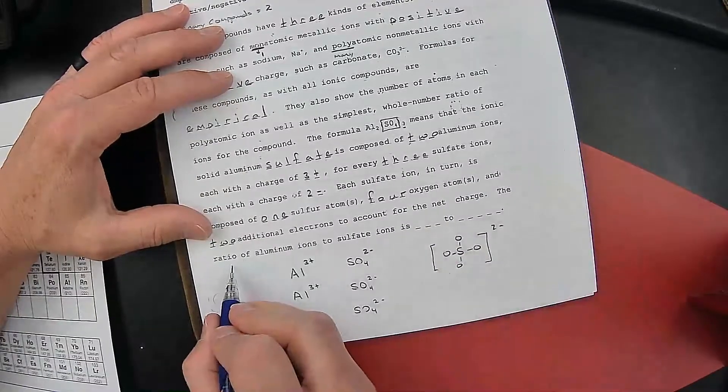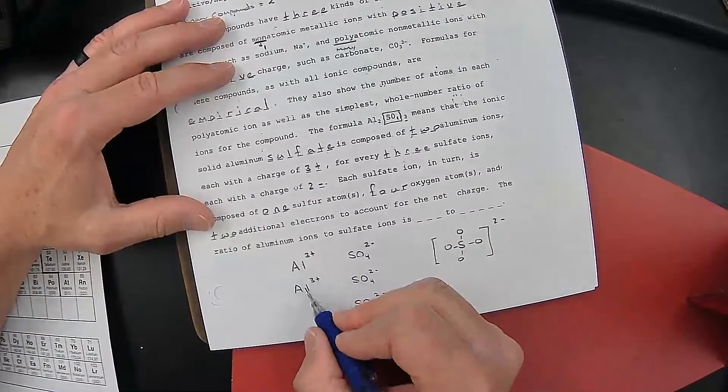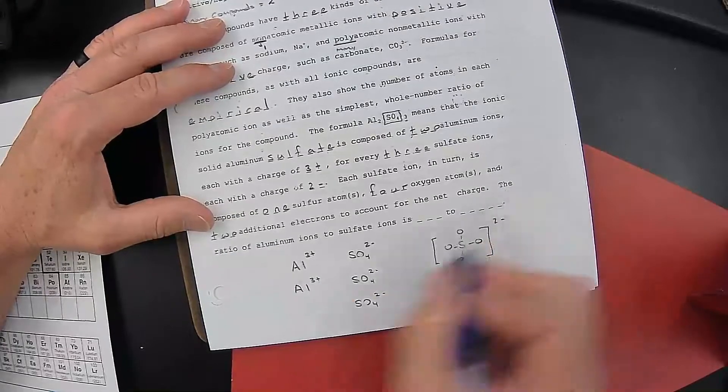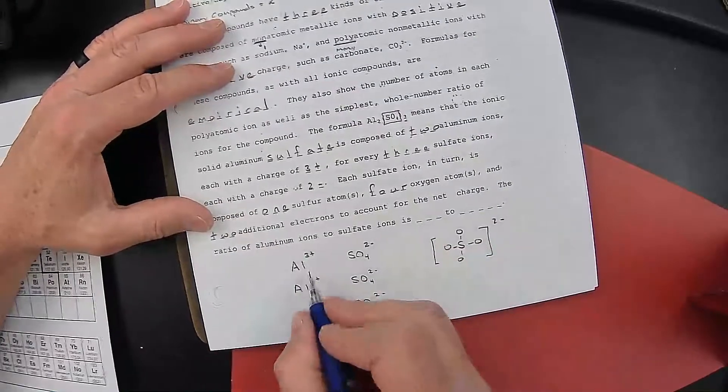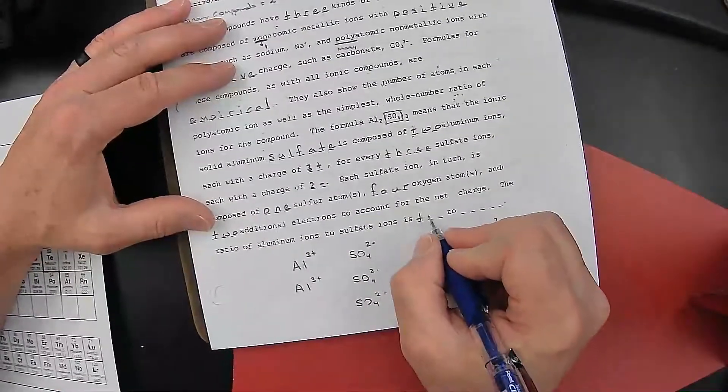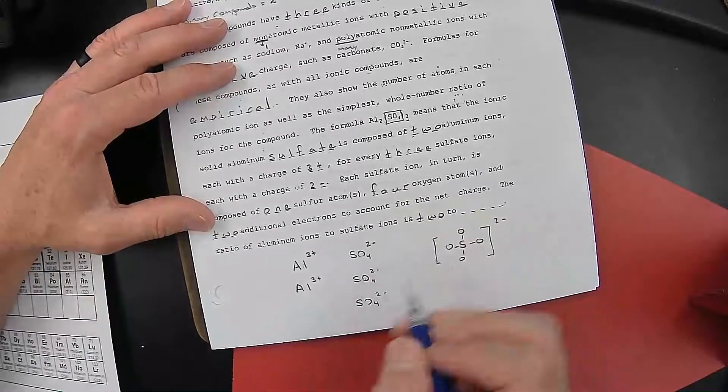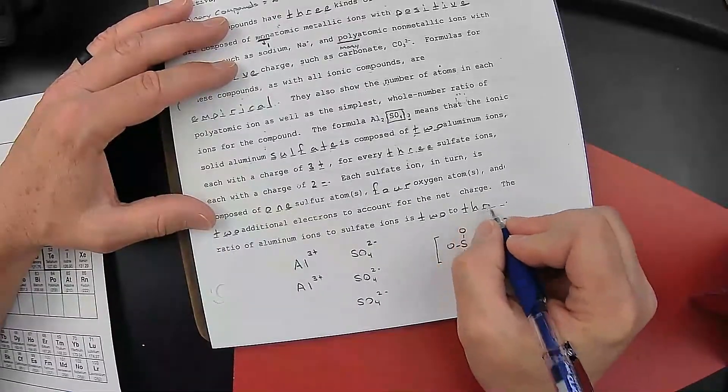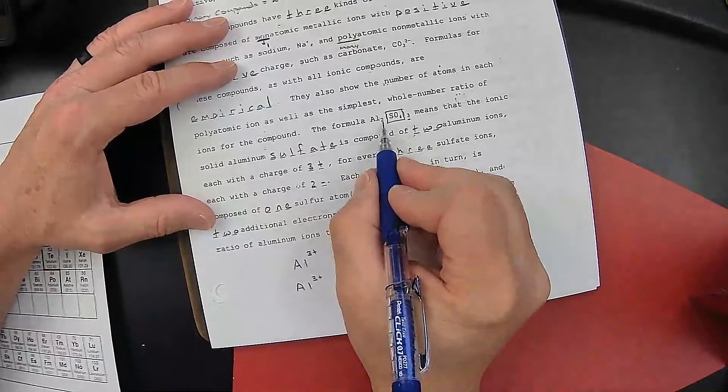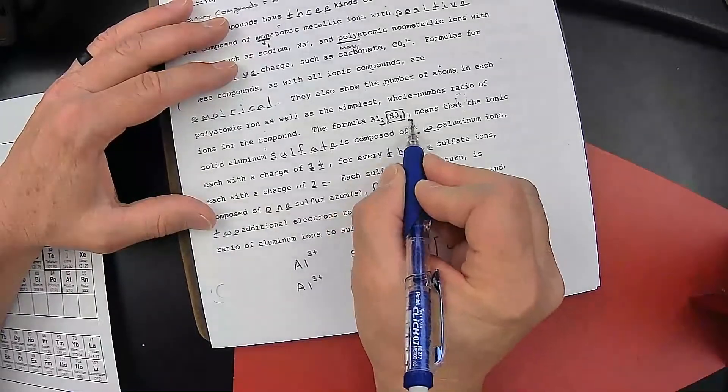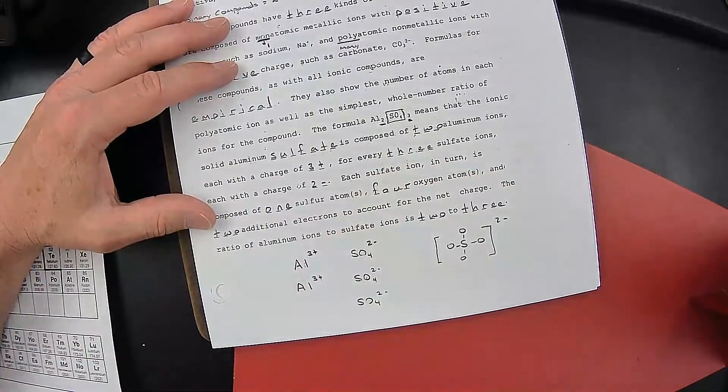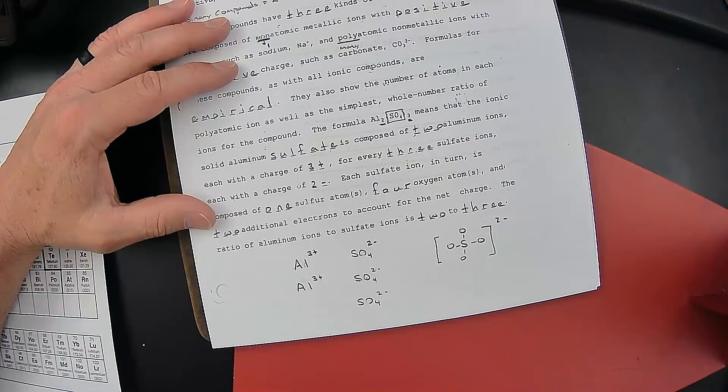The ratio, how many aluminums do we have to how many sulfates? The ratio of aluminums to sulfate is 2 to 3. And that's why it's a 2 to 3 ratio, Al2, SO4, 3.